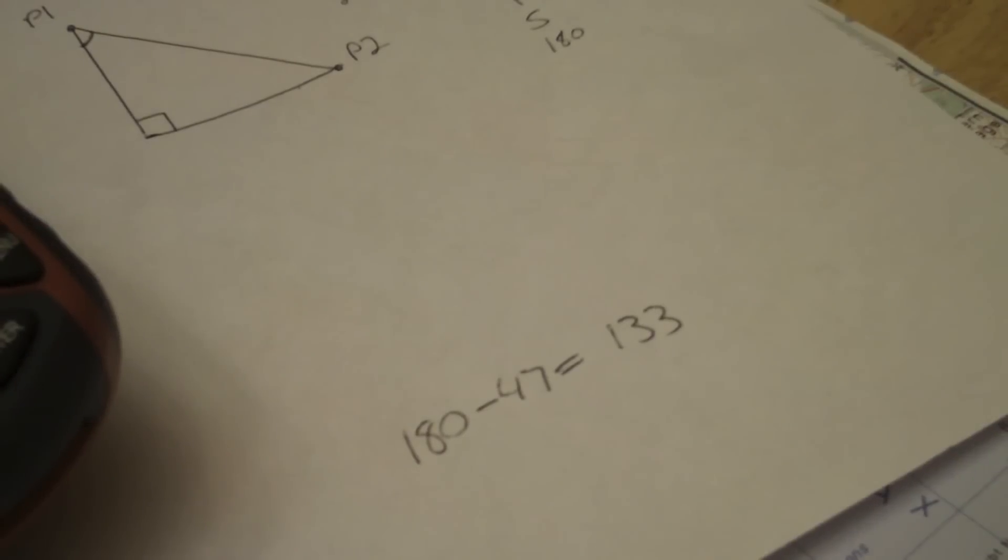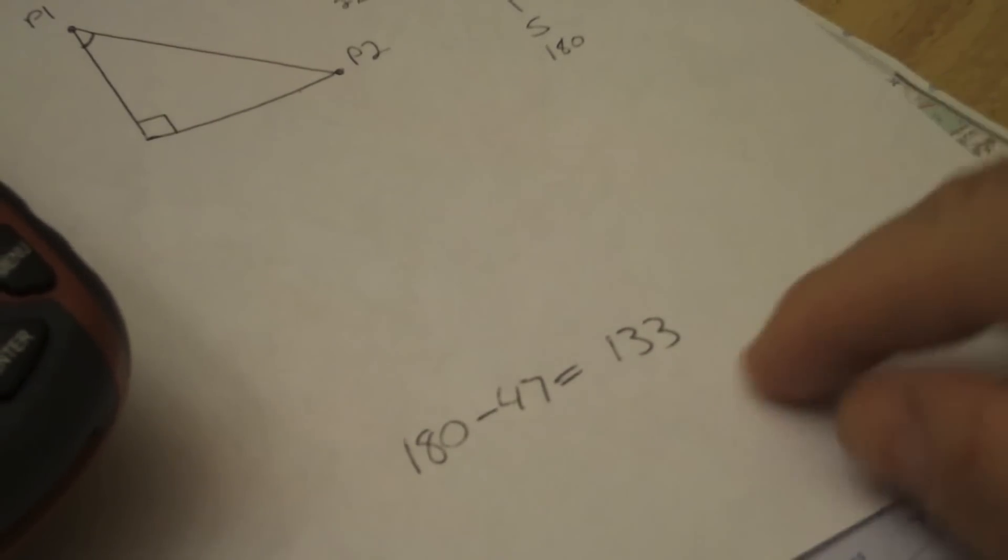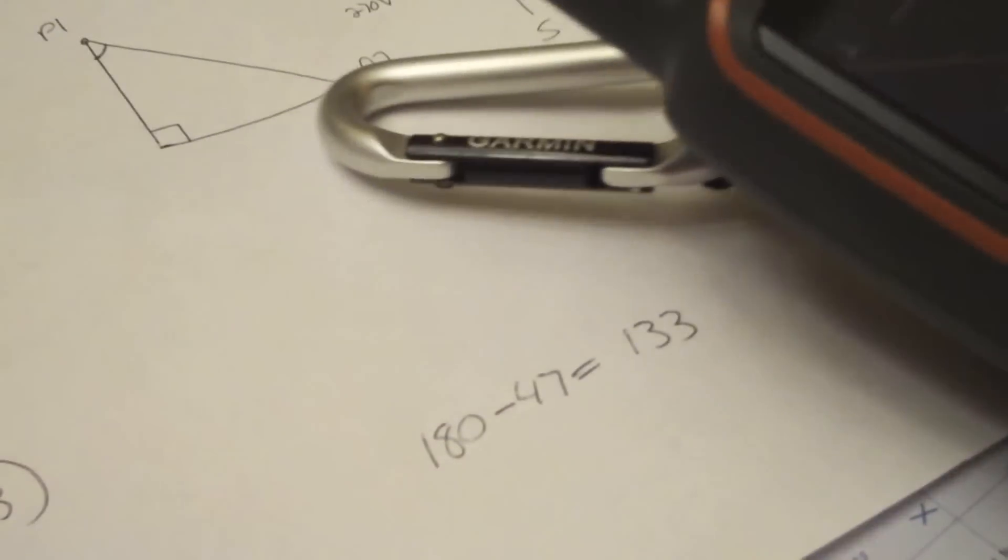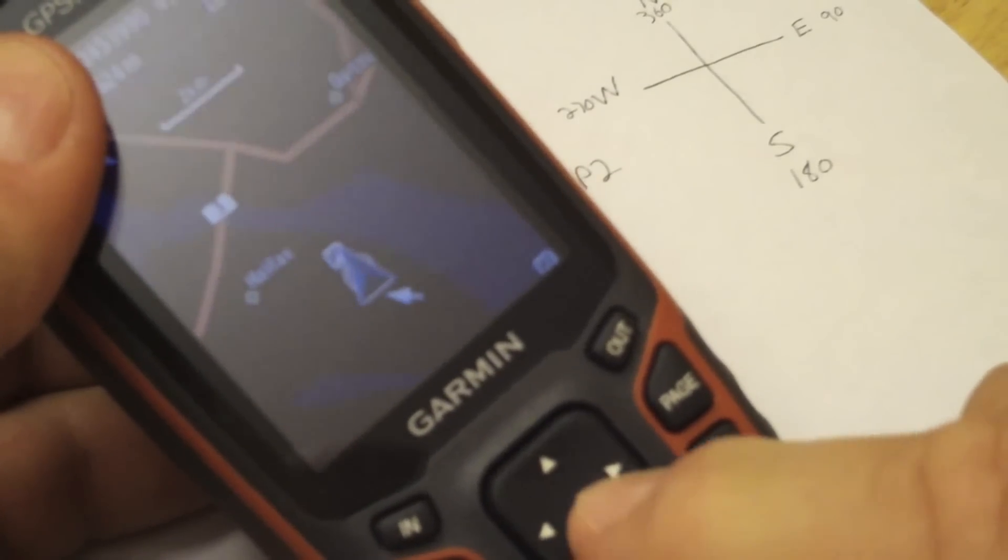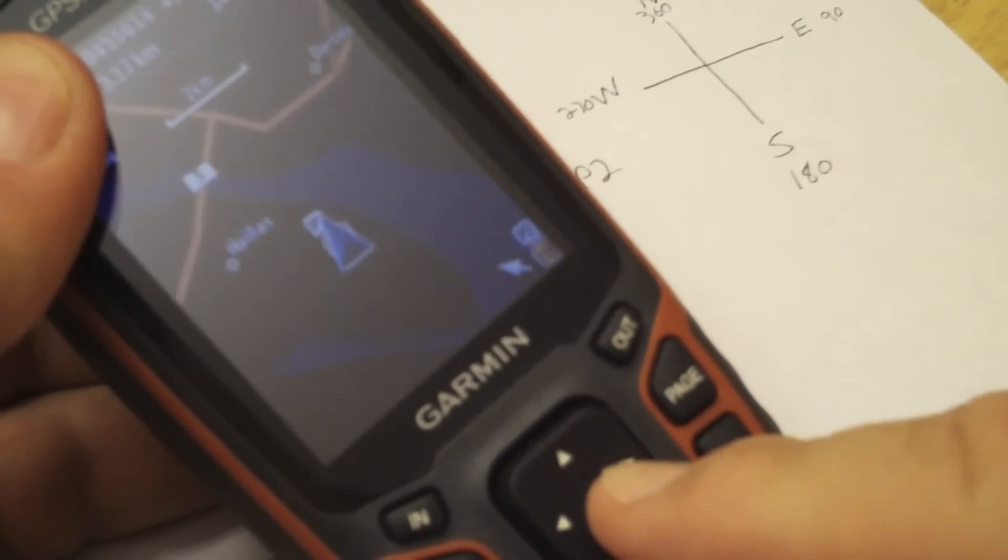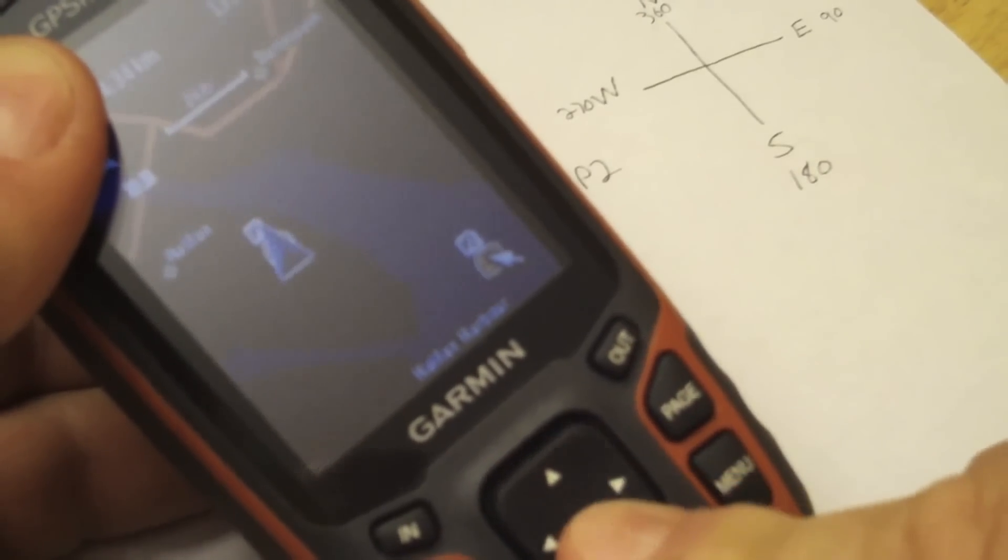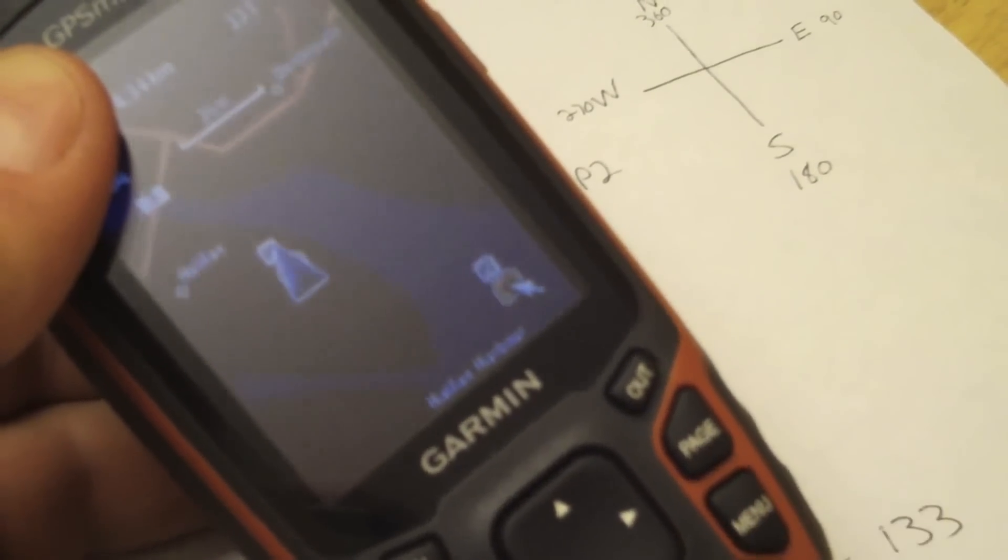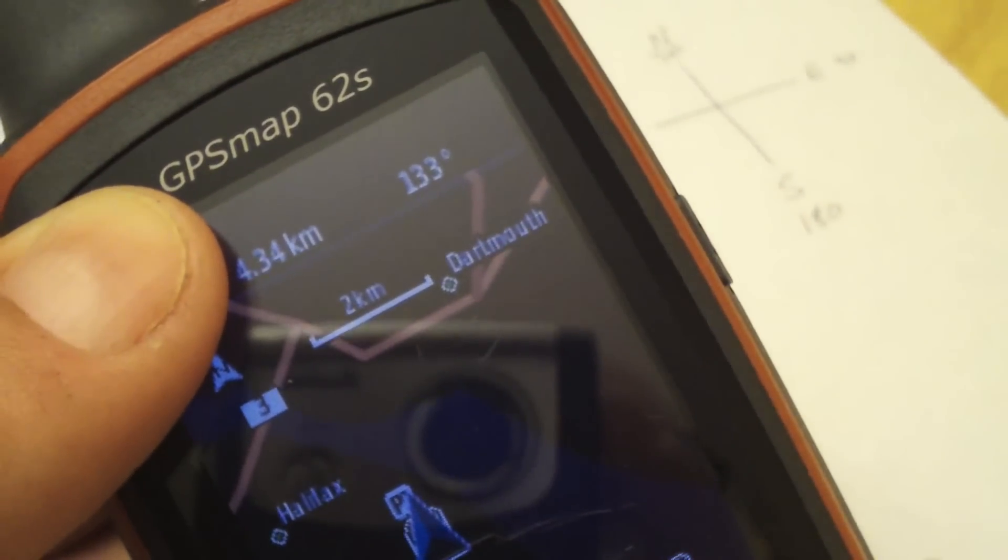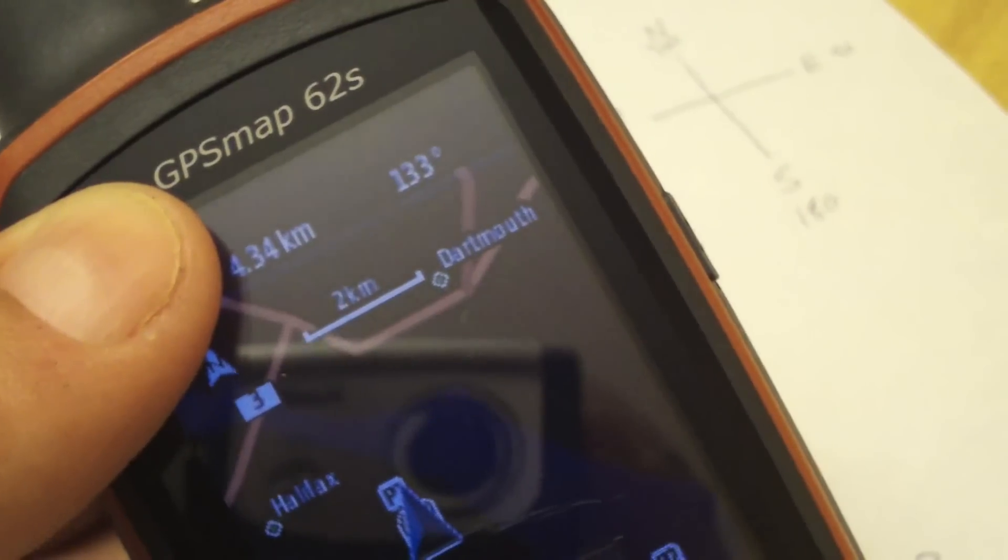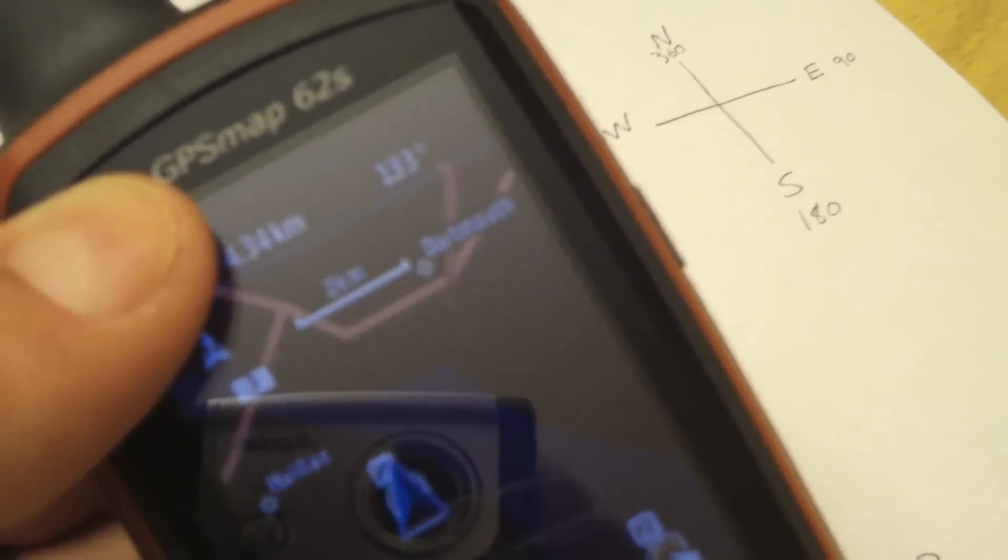Since we have the UTM coordinates right here, we can enter that onto our GPS, and that's what I did here: P1, and there's P2 down here. So what I can do here is just simply put my arrow on top of it, and we can take a look at the display here. Probably see that it says 133 degrees.